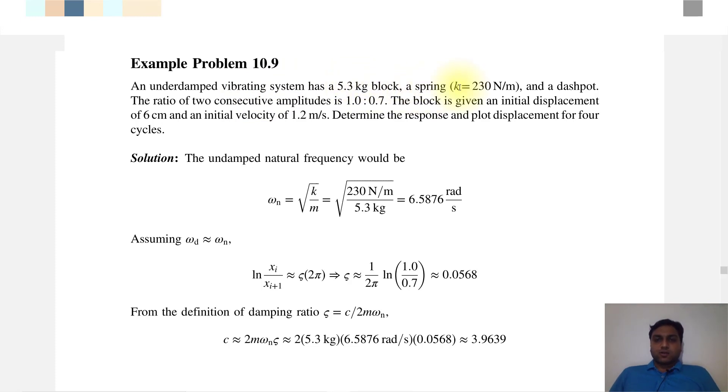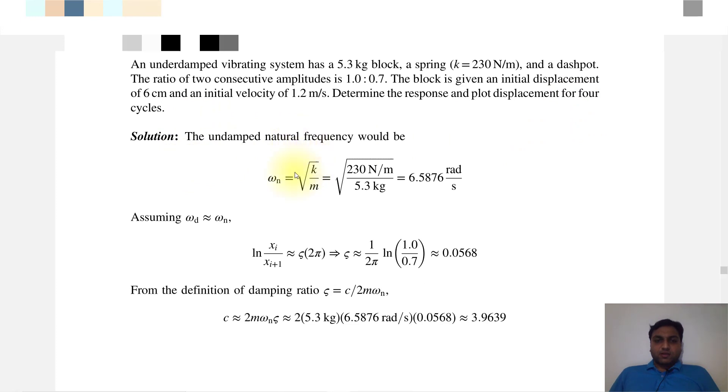The spring stiffness is equal to 230 Newton per meter and the dashpot ratio of two consecutive amplitudes is 1.0 to 0.7. The block is given an initial displacement of 6 centimeter and initial velocity is 1.2 meter per second. Plot the response and plot displacement for four cycles.